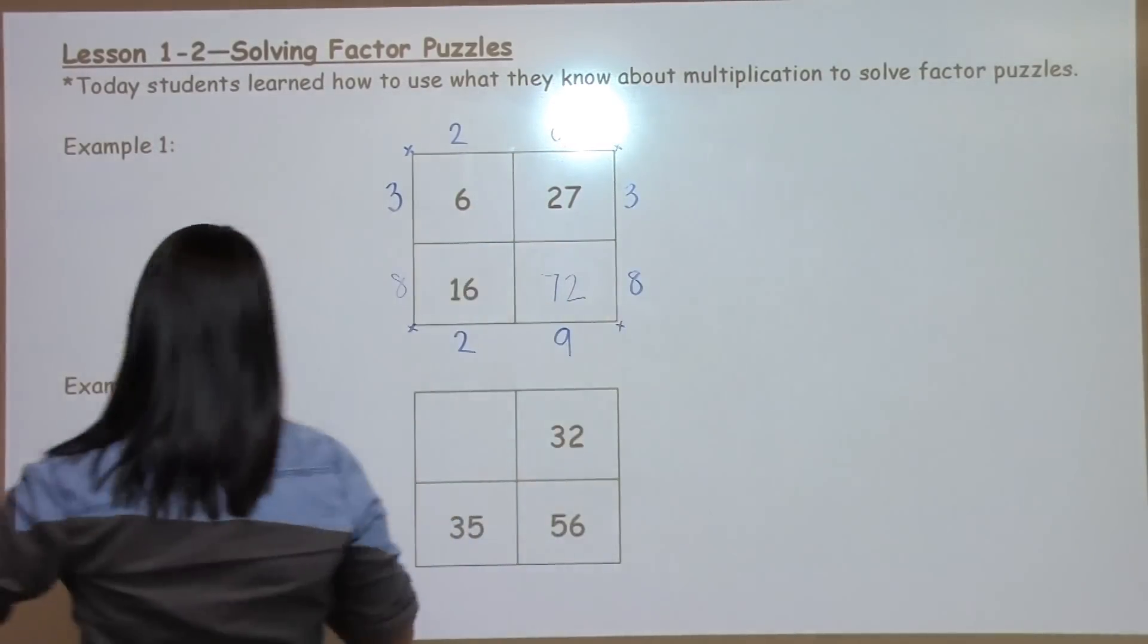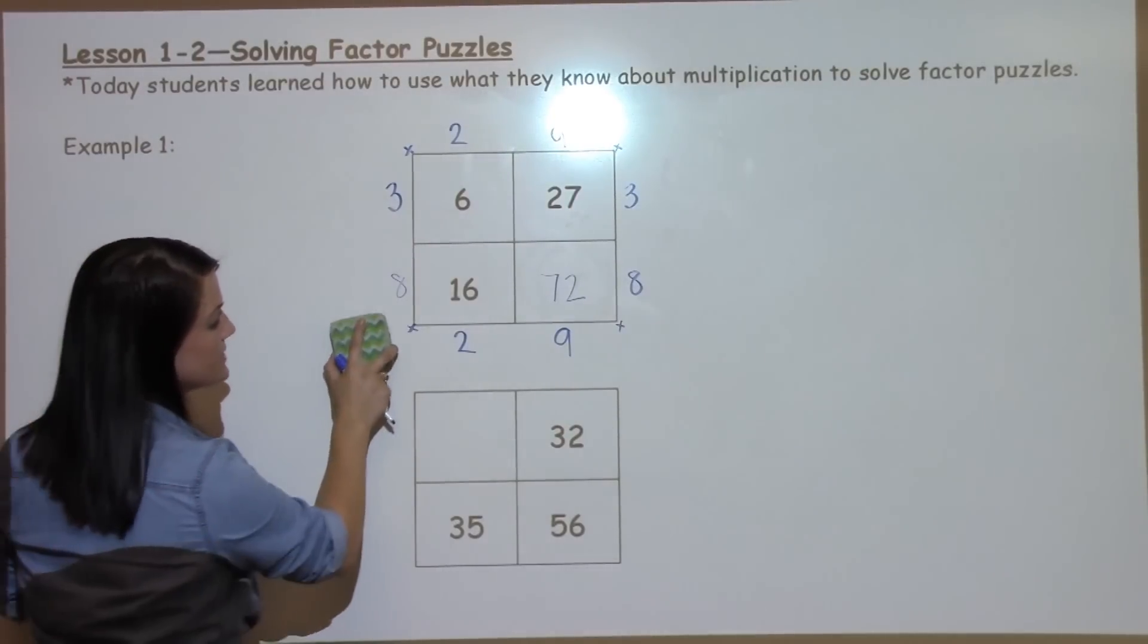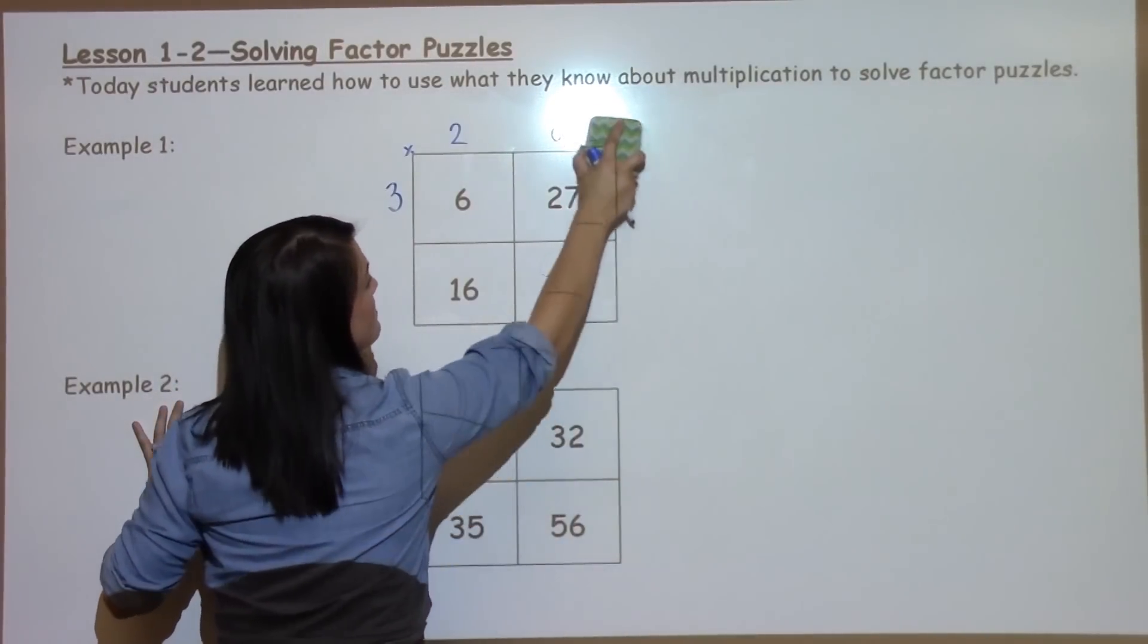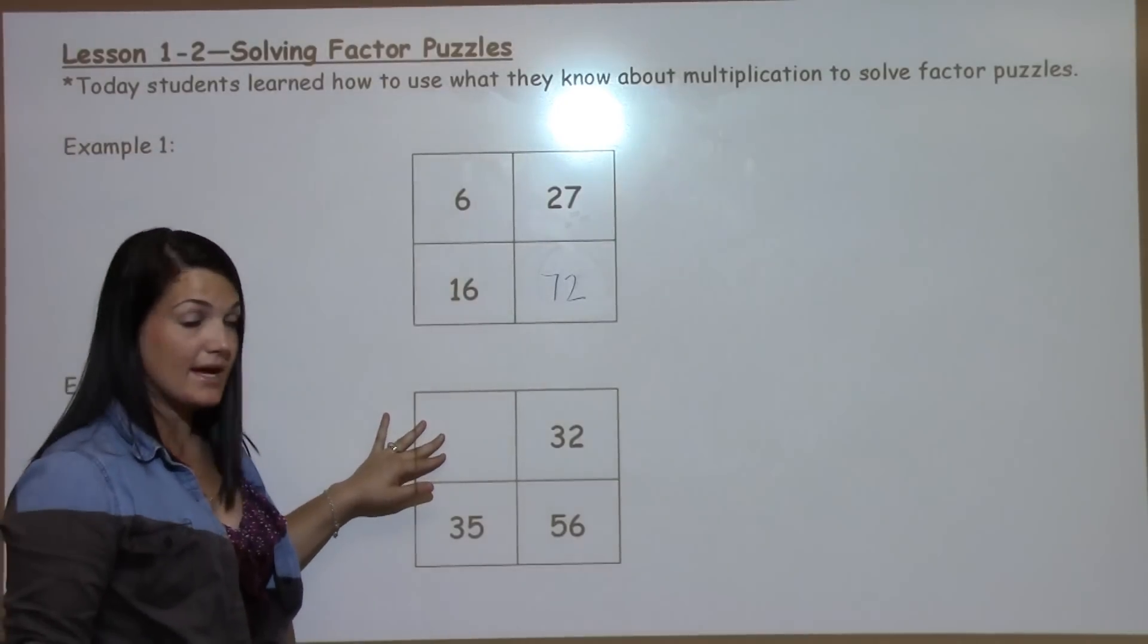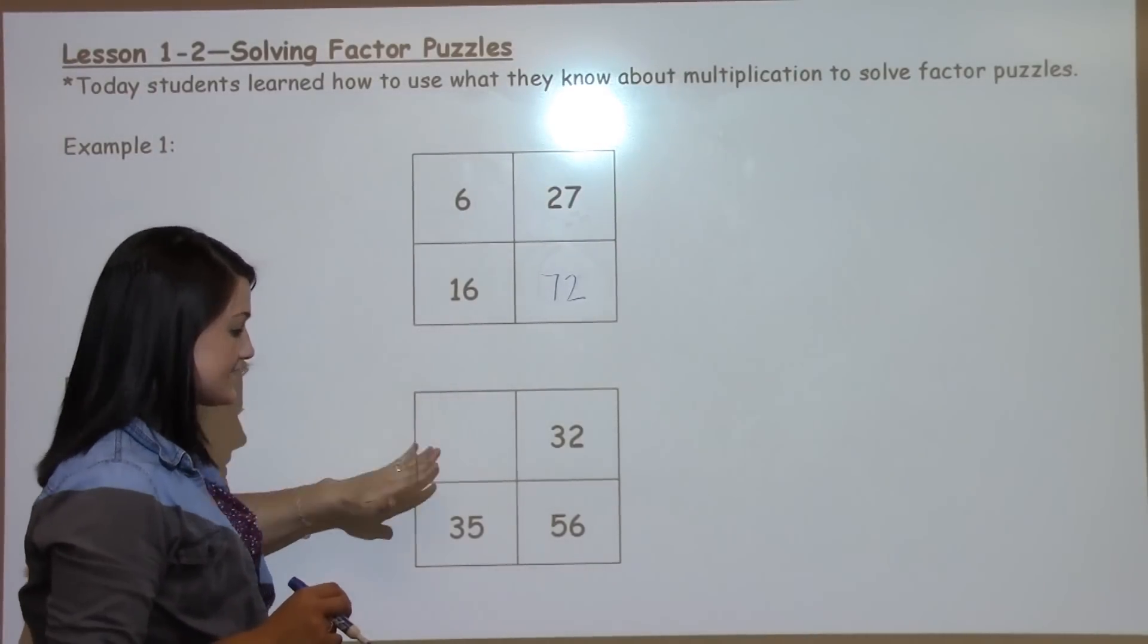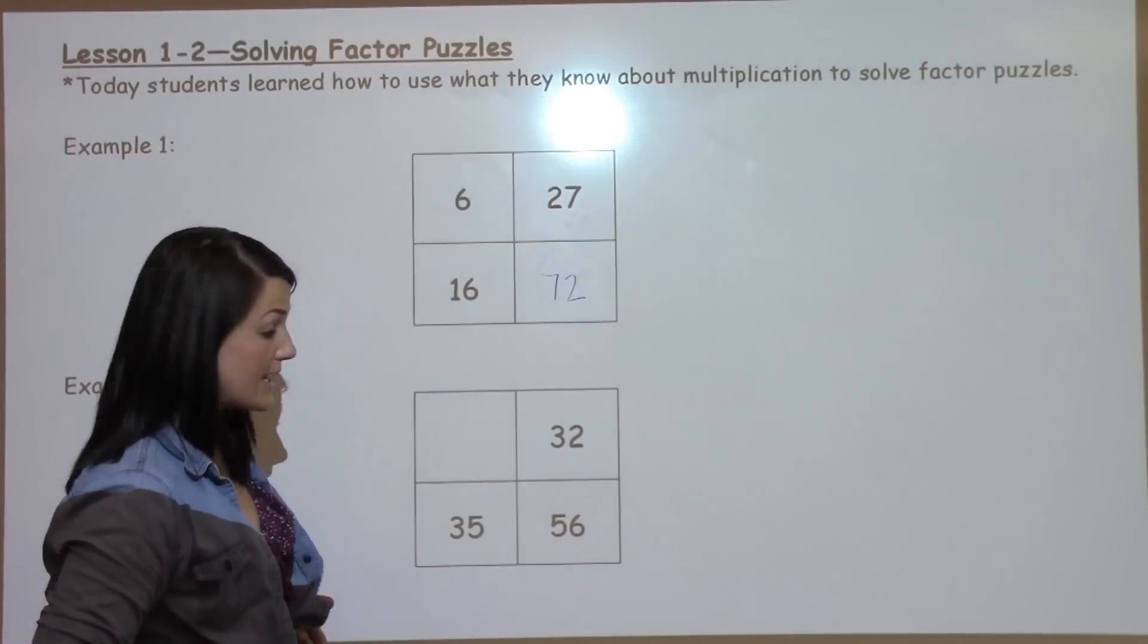So I'm going to erase this just so it doesn't get confusing there with the numbers and show you the next one. So this time we have a different spot in the puzzle missing, but that shouldn't cause us any trouble. We're just going to apply the same strategies as before.